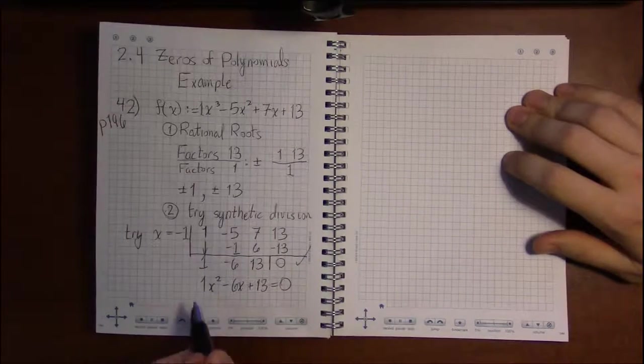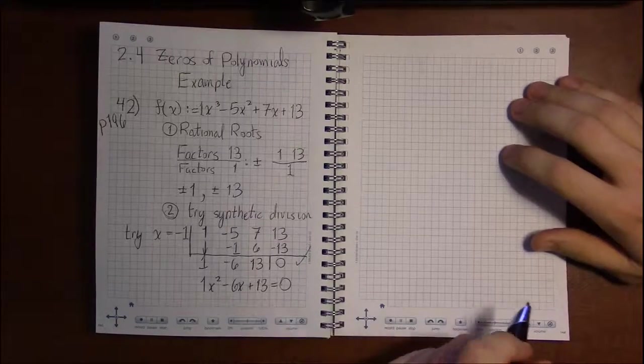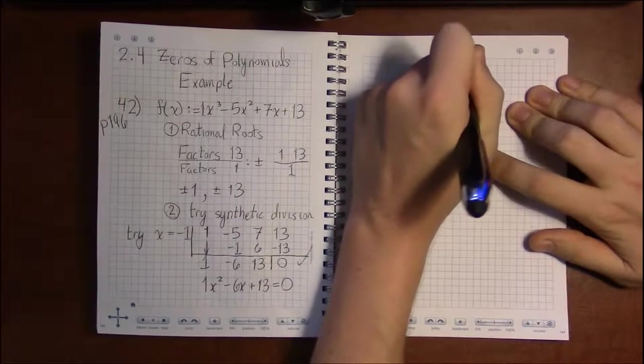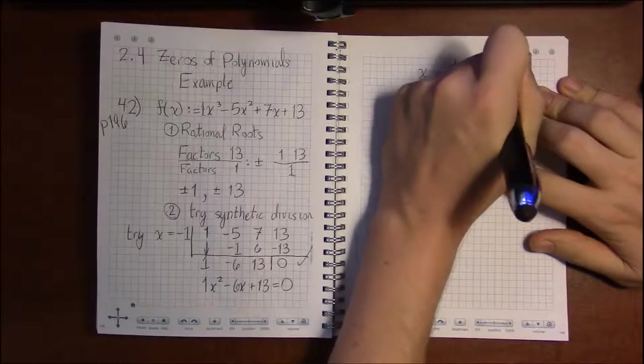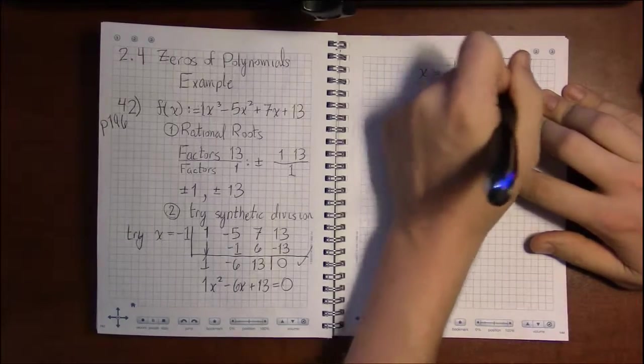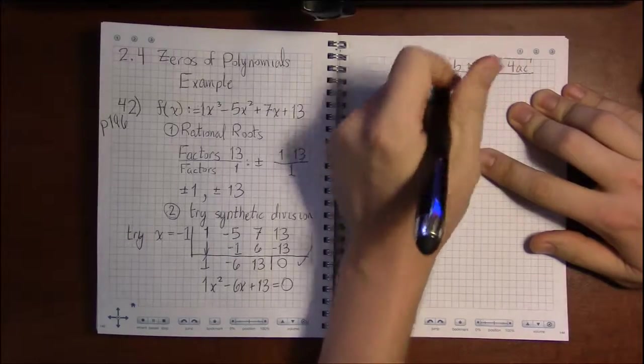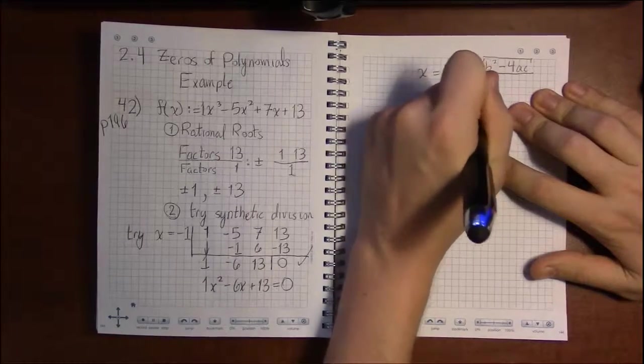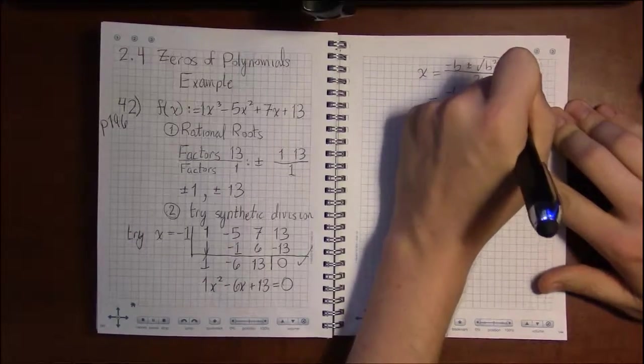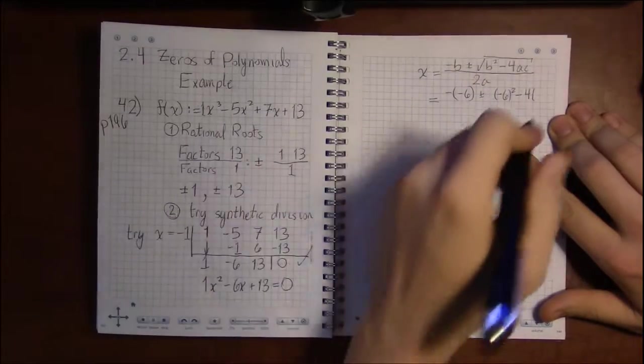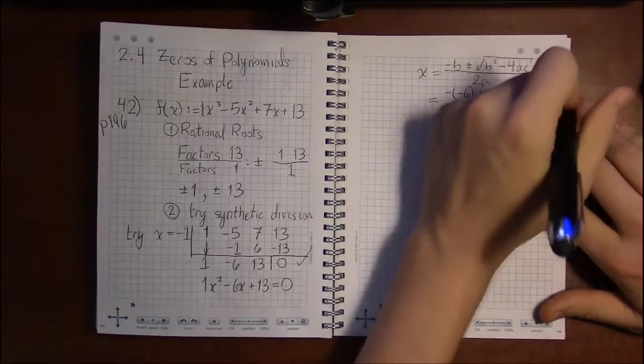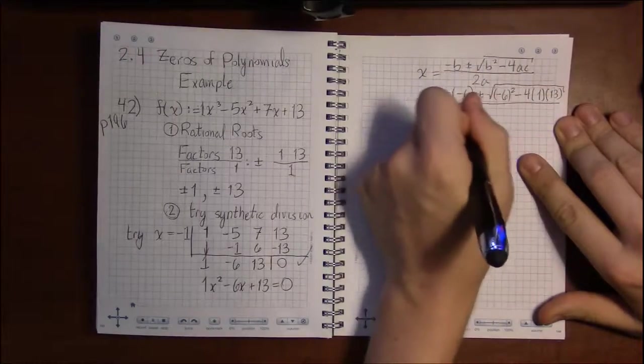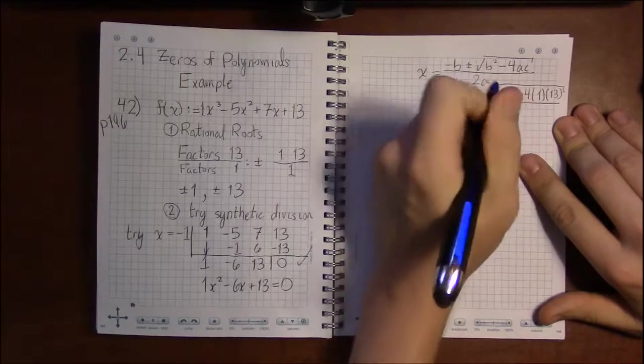This isn't going to factor, so I'm going to resort to quadratic formula: minus b plus or minus square root b squared minus 4ac all over 2a. That is minus b is minus 6, so minus 6 plus or minus square root of minus 6 squared minus 4 times a which is 1 times c which is 13, all over 2 times a.